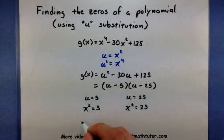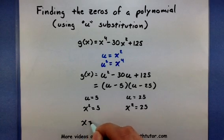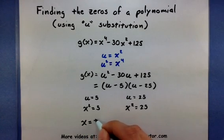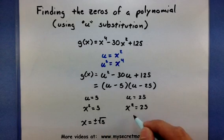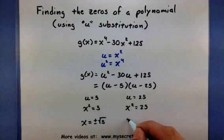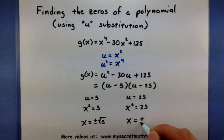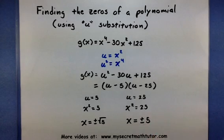So if we take the square root of both sides here, I have x is equal to plus minus the square root of 5. Take the square root of both these sides. So x is equal to plus minus 5. So in total I have four zeros, I have plus minus the square root of 5 and plus minus 5.